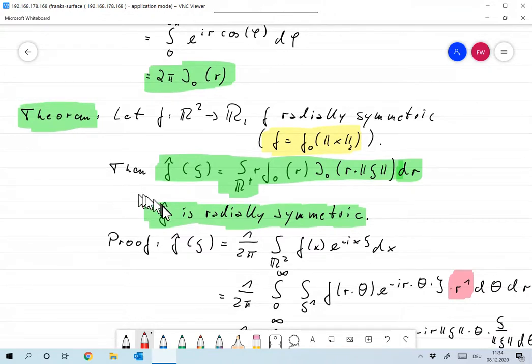I claim that in this case, the Fourier transform of F is also radially symmetric, and it can be represented by Fourier transform of psi is integral over R plus, so 0 to infinity, R times F0 of R, J naught of R times norm of psi, dr.